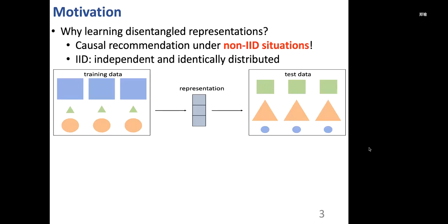The motivation for learning disentangled representations is to accomplish causal recommendations under non-IID situations. This is an example from computer vision, and suppose the task is to predict the shape of each object. Intuitively, models should predict the shape by capturing the outline of each object. However, if we only look at the training data, we can find that models can also predict the shape from the color or the size of each object. If test data is IID with training data, then we cannot distinguish between good models and bad models. In this example, training data and test data are not IID. Then, only those models that learn disentangled representations for outline, size, and color can survive under test data.